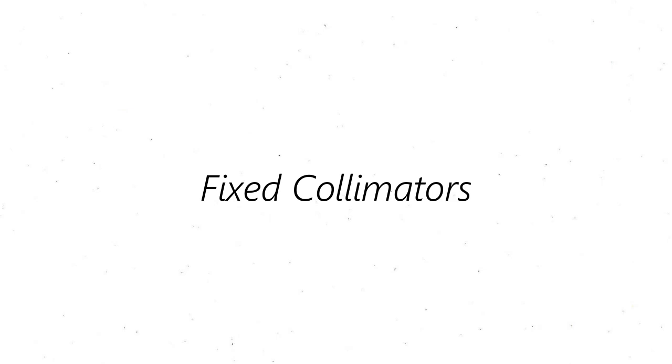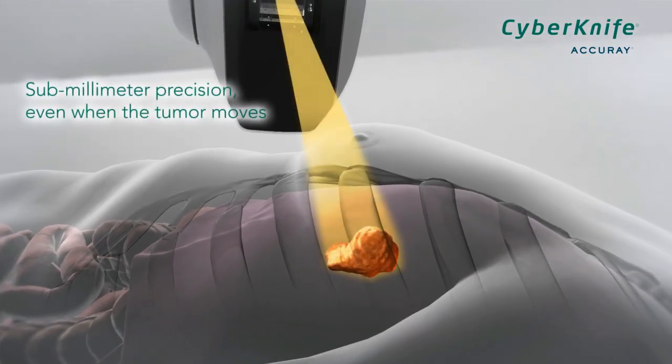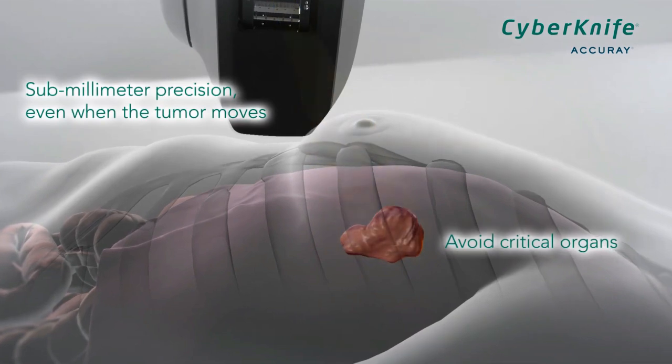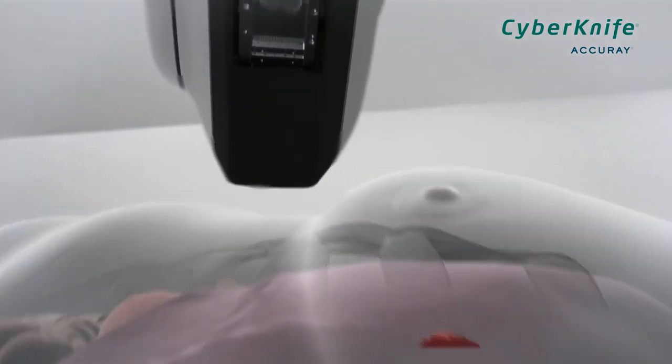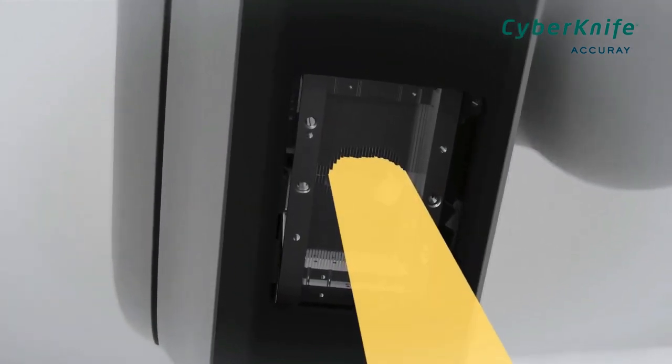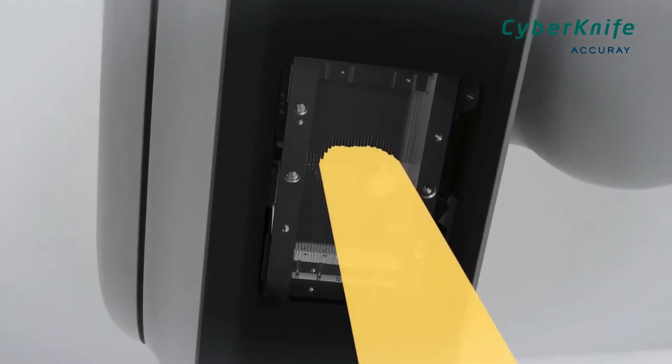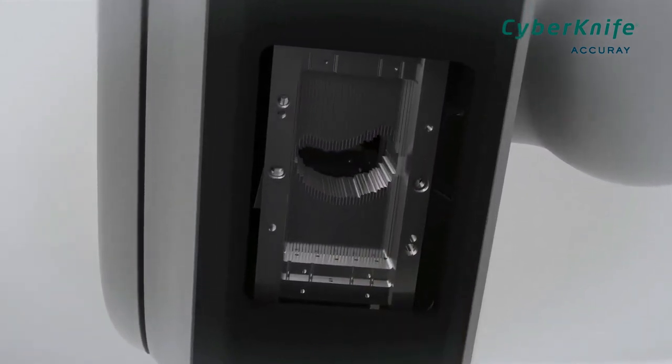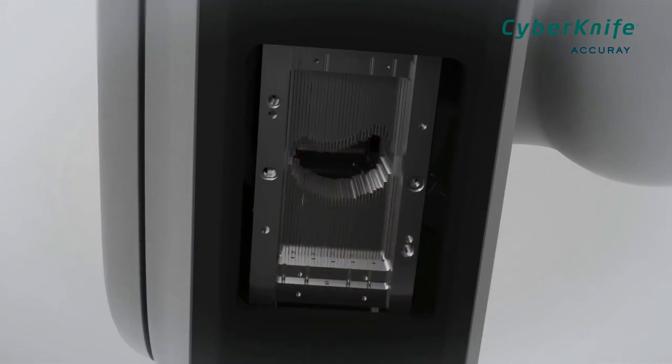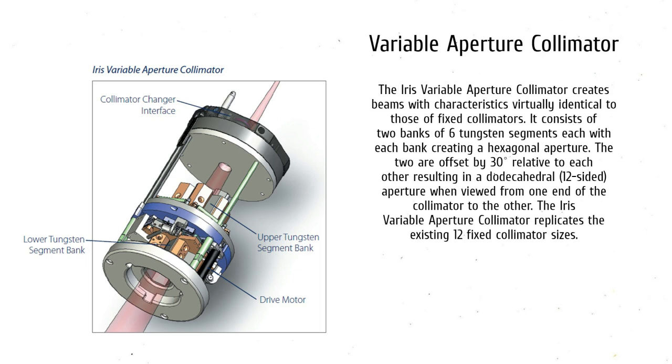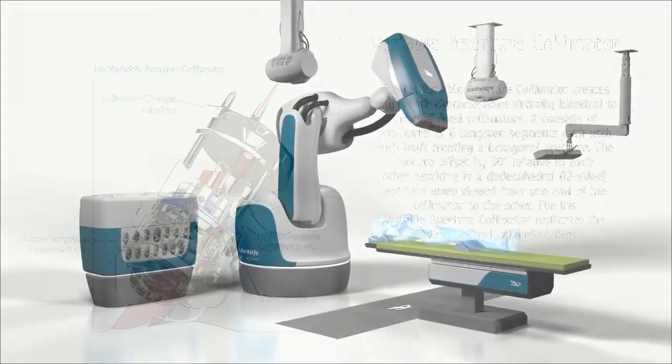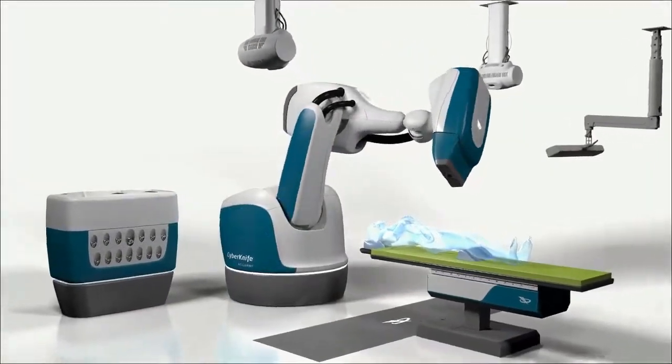The third component are fixed collimeters. The CyberKnife system is supplied with fixed secondary collimeters delivering circular field sizes of 5, 7.5, 10, 12.5, 15, 20, 25, 30, 35, 40, 50, and 60 mm diameter at 800 mm SAD. These collimeters can be changed to vary the beam size as generated by the treatment plan. For each fixed collimeter, the manipulator traverses a separate path.